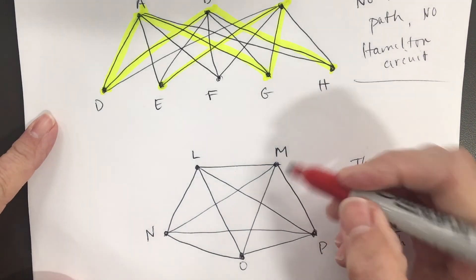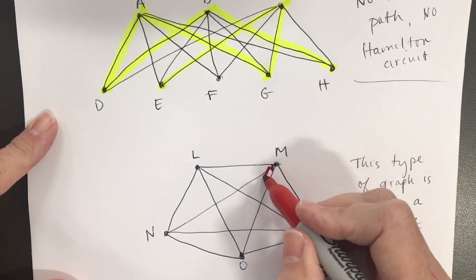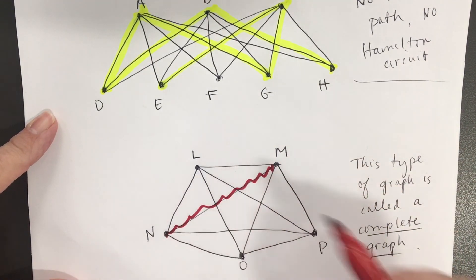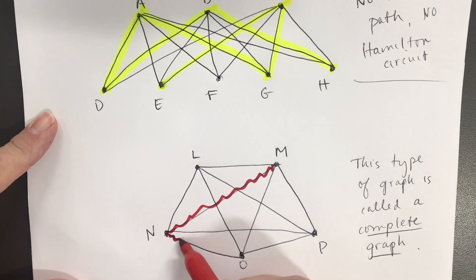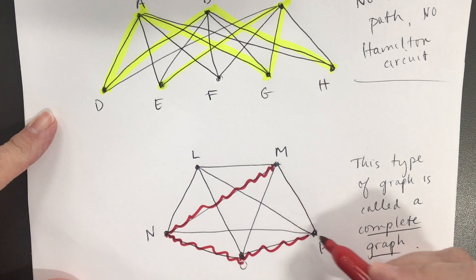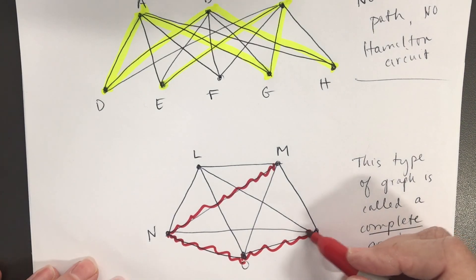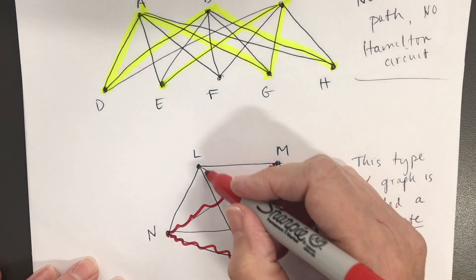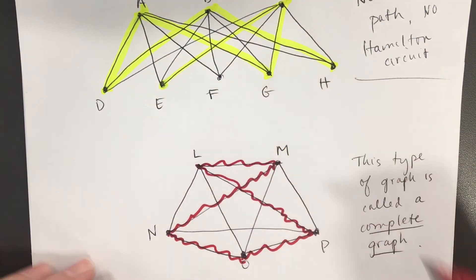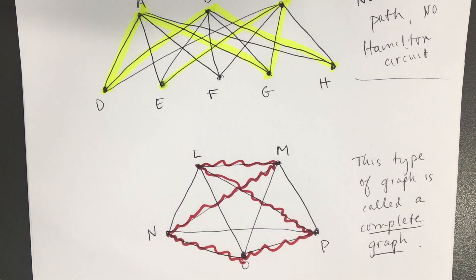I'll start at M. I'm going to go to N. Then I'm going to go to O. I'll go to P. At this point, I have to go to L. It's the only one I have left before I go back home to M. So there's a Hamilton circuit on that one. There are others.